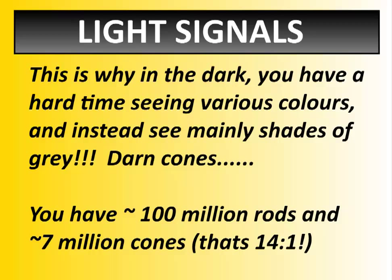In the dark you can't see very well because of all those different shades, and the more color apparent in the dark, the more you're going to rely on those rods to see them. You have approximately 100 million rods and only approximately 7 million cones — that's a 14 to 1 ratio of seeing in light and dark versus seeing in color. So you can tell that our bodies are designed to work in the light and dark more so than to see color, although we still see it — and that's a good thing.